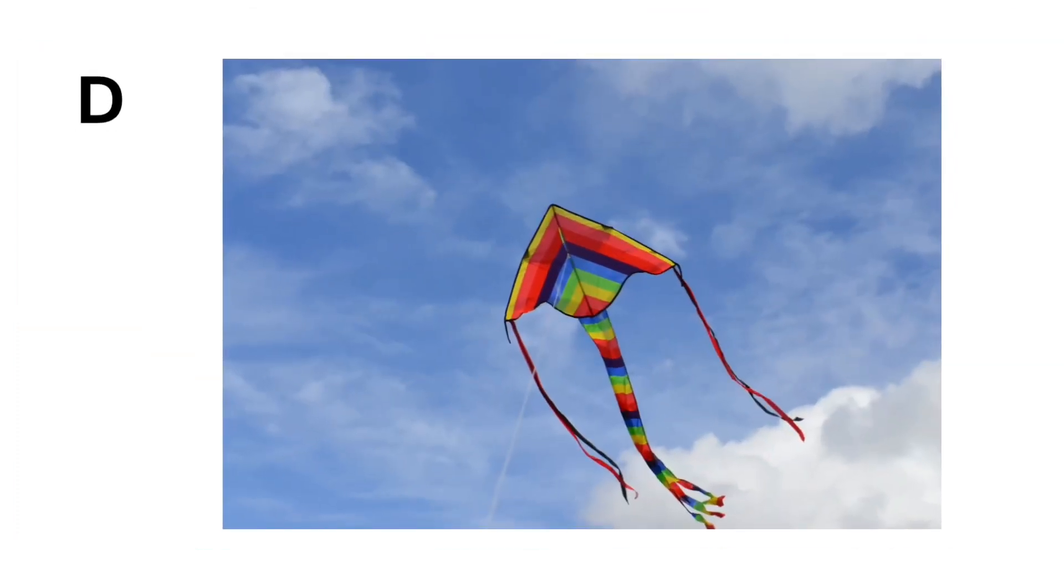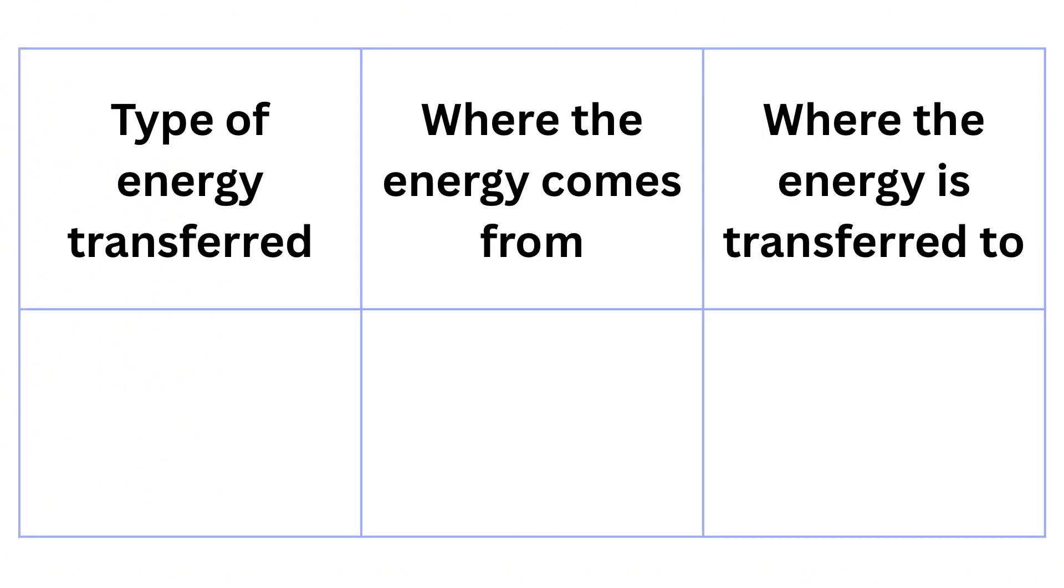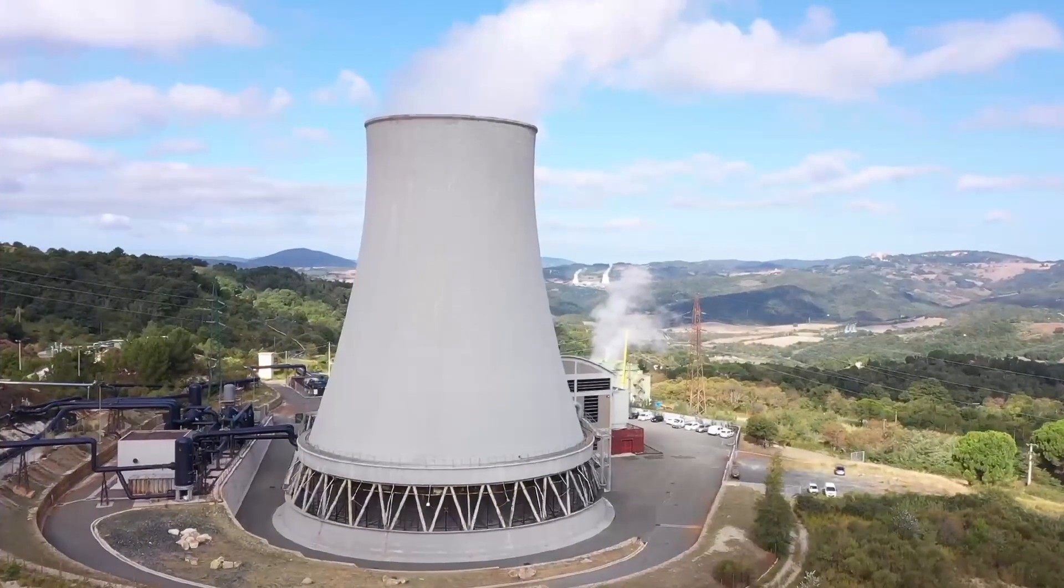Finally, we have someone flying a kite. This one's a bit different. The kinetic energy of the wind pushes against the kite, causing it to fly. The energy comes from the wind itself and is transferred to the kite, which then moves and stays in the air. And there you have it.